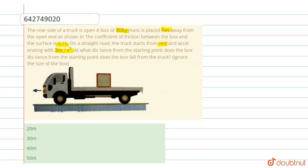In this question, we have to find the distance. We know that the box is initially 5 meters away from the open end, and the acceleration is 2 meters per second squared.